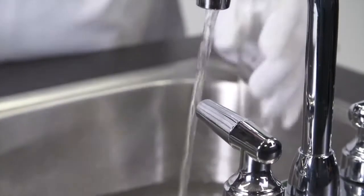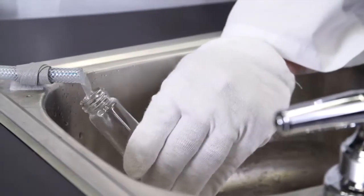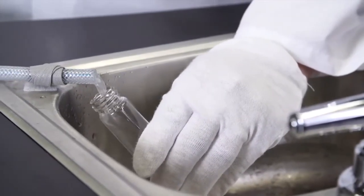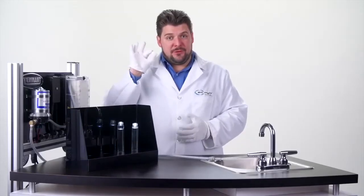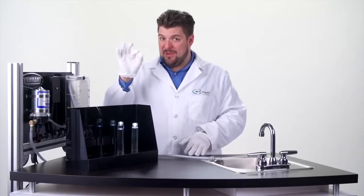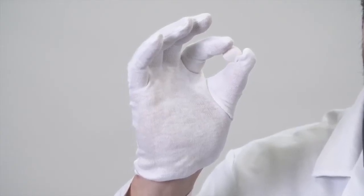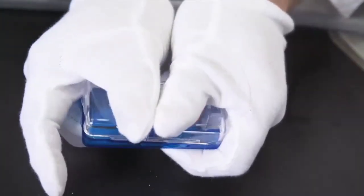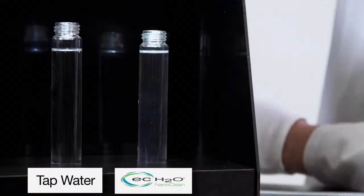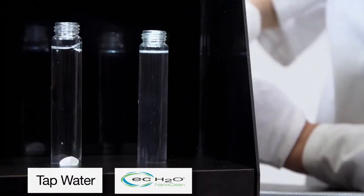Now I'm going to take two vials, one filled with plain water, the other with EC Water Nanoclean solution. Here, I have a piece of European candy that's well known to react strongly with diet soda in many viral videos you may have seen on the internet. I'm going to cut it in half and put one half in each of these vials.